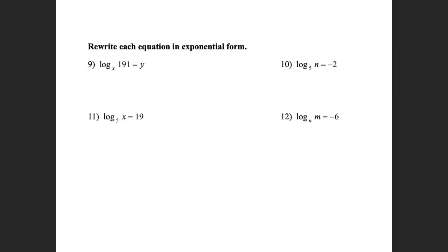So I can rewrite an exponent as a logarithm. And I should also be able to go backwards — rewrite logarithms as exponents. This is my base. So this is going to be x to the y power is equal to 191. Here, this would be 5 to the negative second power is equal to n. This one would be 5 to the 19th power is equal to x. And this one would be n to the negative 6 is equal to m.